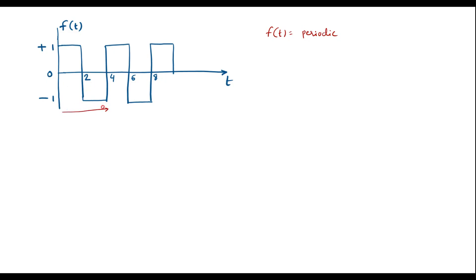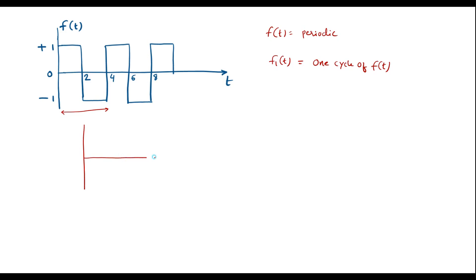From here to here, this is called one cycle of the signal. We need to find the Laplace transform of one cycle of the signal, and then find the Laplace transform of the entire signal. Let me consider f₁(t) as one cycle of f(t). Let me draw f₁(t) — only one cycle of f(t), which looks like this.